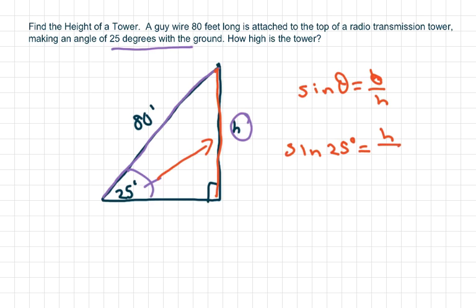And cross multiply: 80 feet times sine of 25 degrees is your height, which is approximately 33.81 feet.